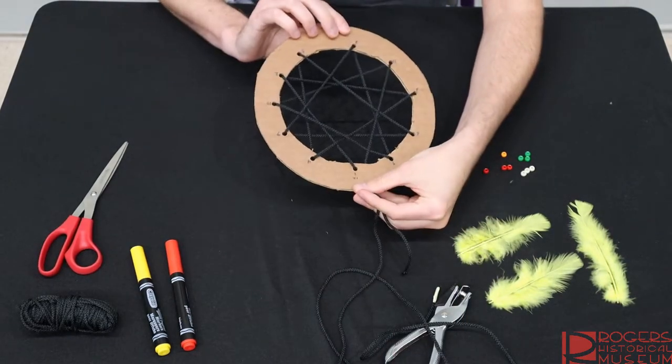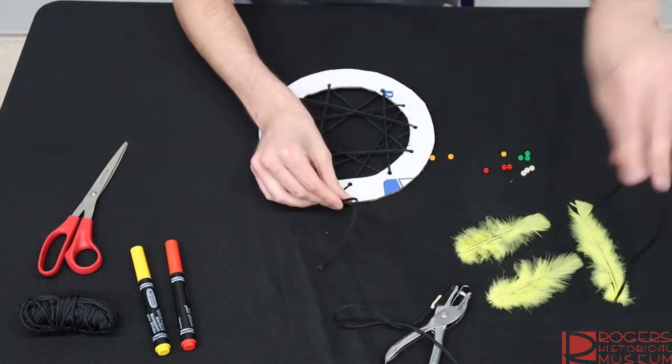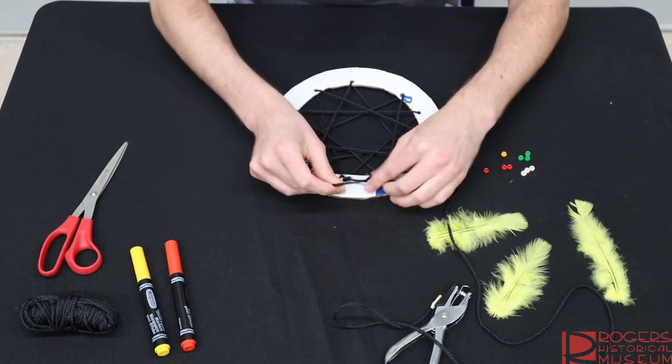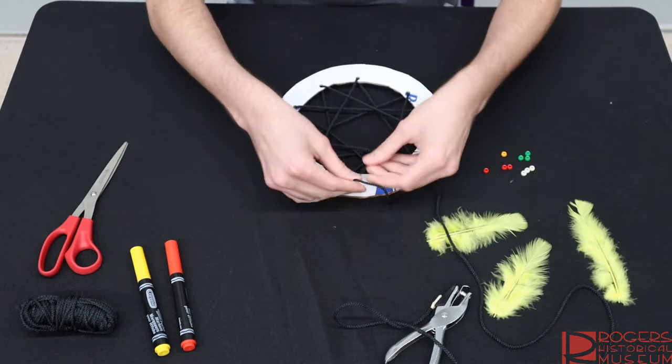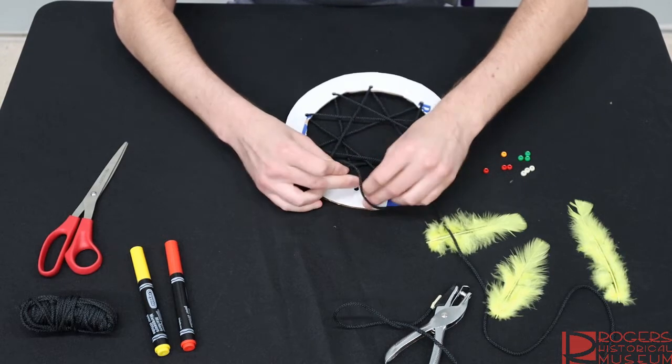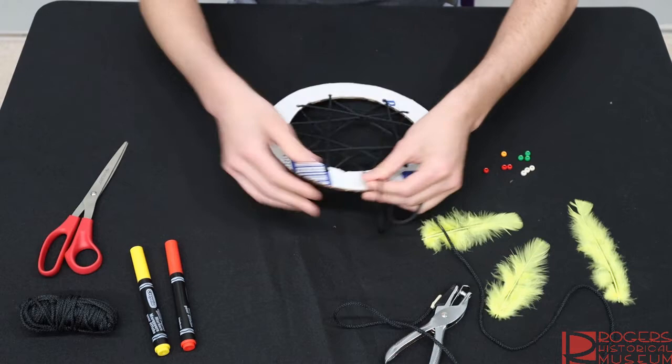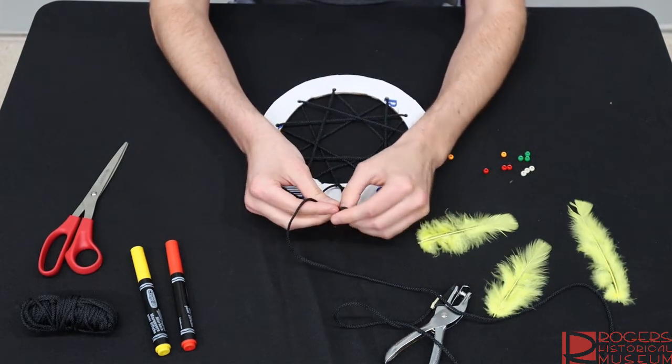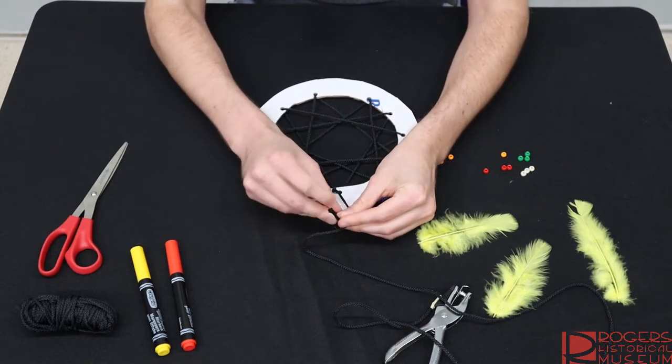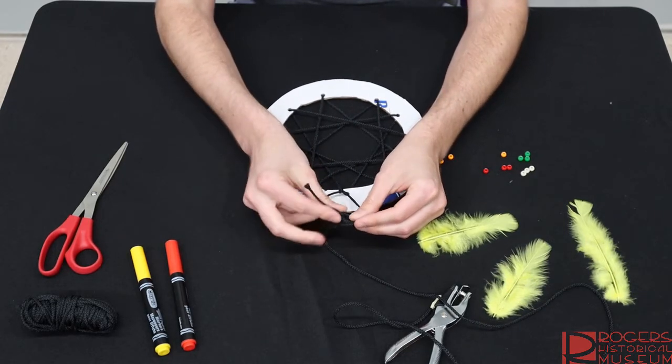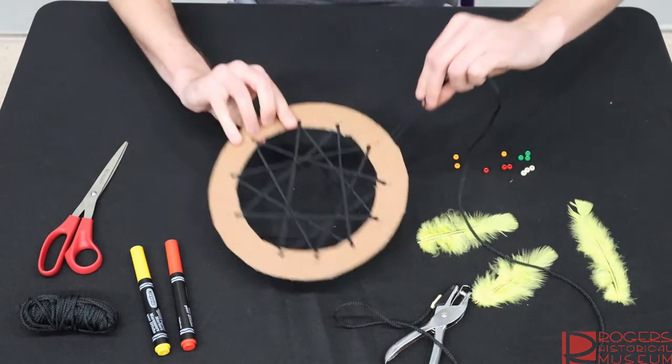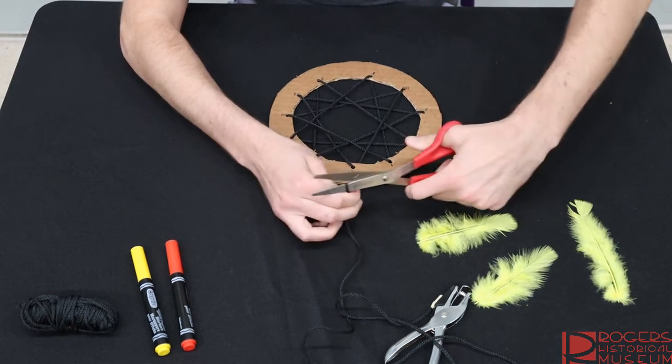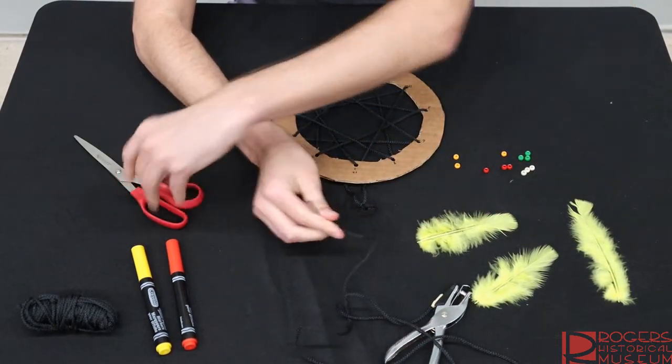Now that we have it through all of the holes, we're going to flip it over here. And we're going to tie it off. So I'm going to tie it. So there's a little knot here. It's nice and snug. And now with the extra string here, I'm just going to make a little bit of a tie at the top. So that way I have a little bit of a loop that I can hang it with. So we've got our dream catcher made. Now it's time to decorate it. I'm going to cut this little bit of extra string off here.